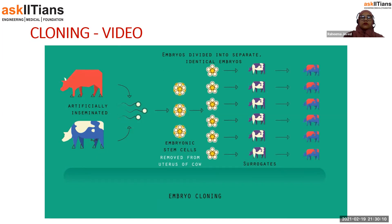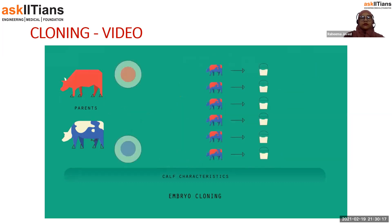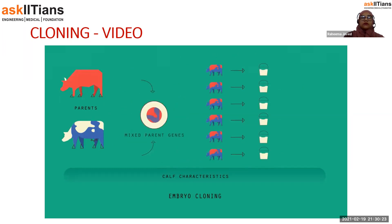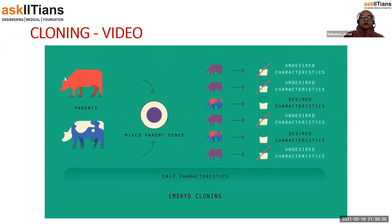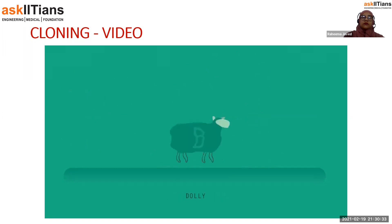In embryo cloning, a cow is artificially inseminated using sperm. The embryos grow until they form a ball of embryonic stem cells; before specialization, the embryos are removed, divided into separate embryos with the same DNA, and each is placed into the womb of a different surrogate cow. The calves will be clones of each other but not of the mother, due to the bull's sperm.